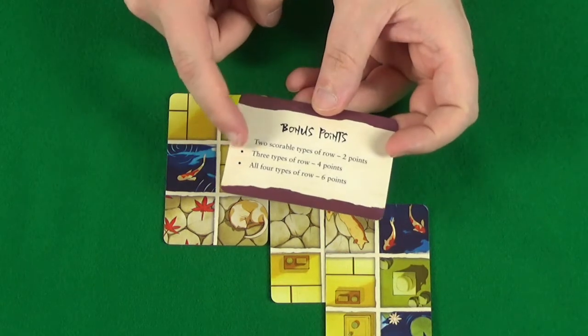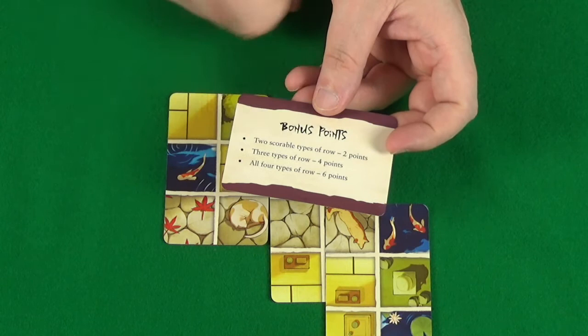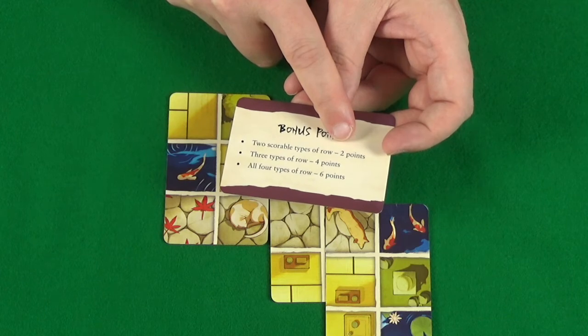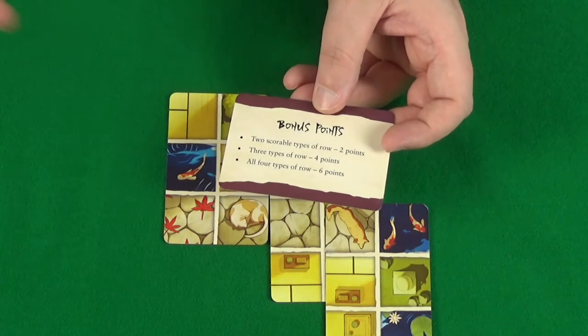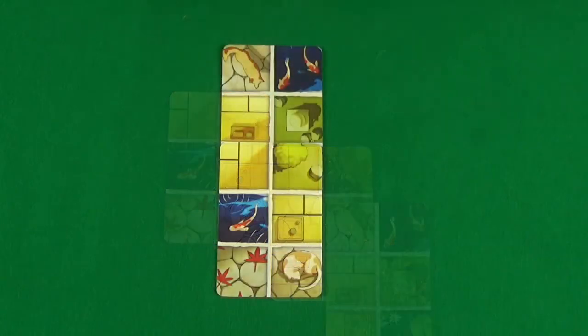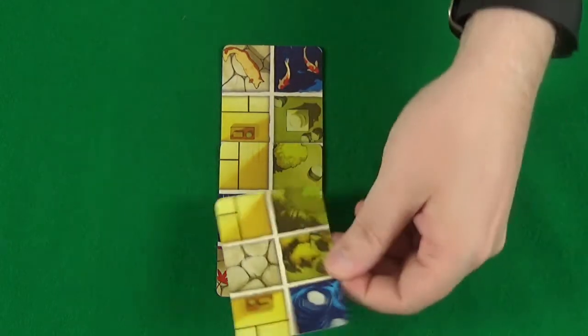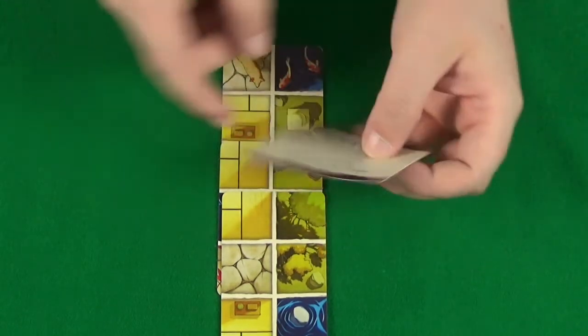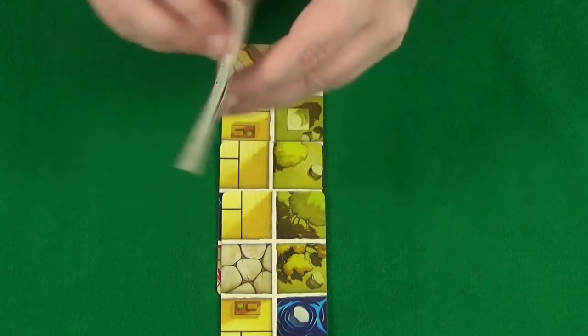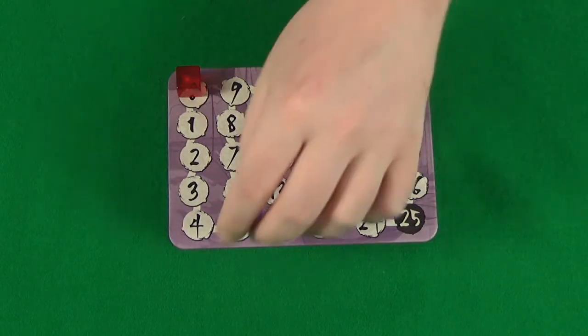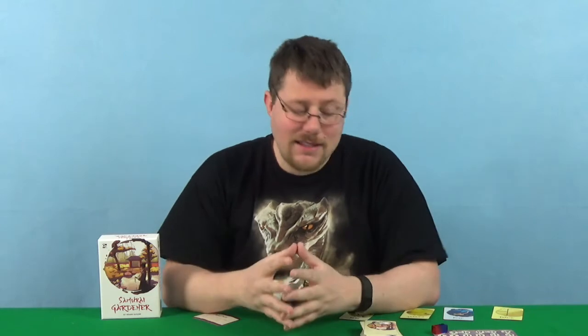You can also get bonus points if you score multiple types in the same scoring round. So if you score two, then you get a bonus two points. If you score three, four. And if you score all four types of features, then you get six points. So in a situation like this, if I had these garden cards and I then built this, I would score a row of four and a row of three. So that would get me one plus two points, and then for scoring two different types of features, a bonus two points. So I would go to five points.